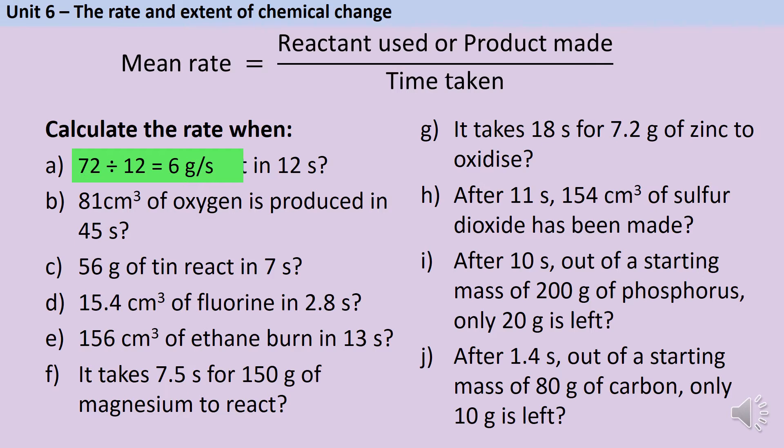If 81 centimetres cubed of oxygen is produced in 45 seconds, then I do the volume divided by the time. Remember you're always dividing by time. That gives me an answer of 1.8 centimetres cubed per second. And remember the cubed sign is part of the units because we're talking about a volume. It doesn't play any part in the calculation that you're doing.